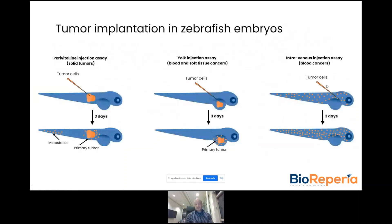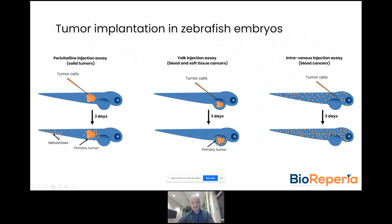Zebrafish tumor models can be envisioned in several ways. Tumors implanted subcutaneously in zebrafish will form a solid tumor that both invades locally but also sends out metastases into the hematopoietic plexus in the tail fin, a similar region to bone marrow in humans.